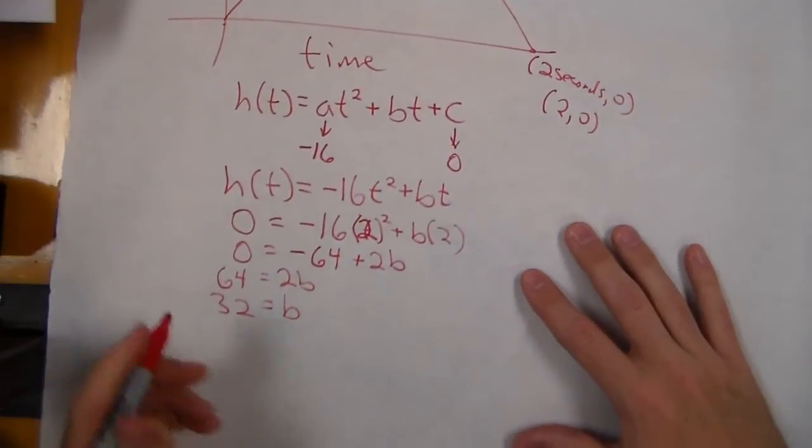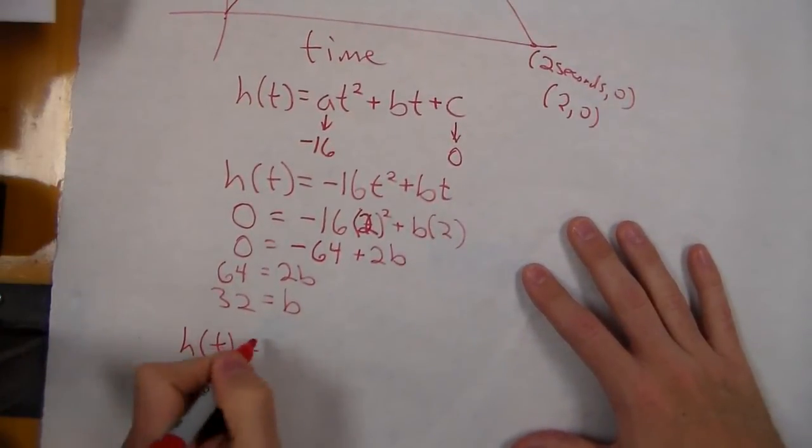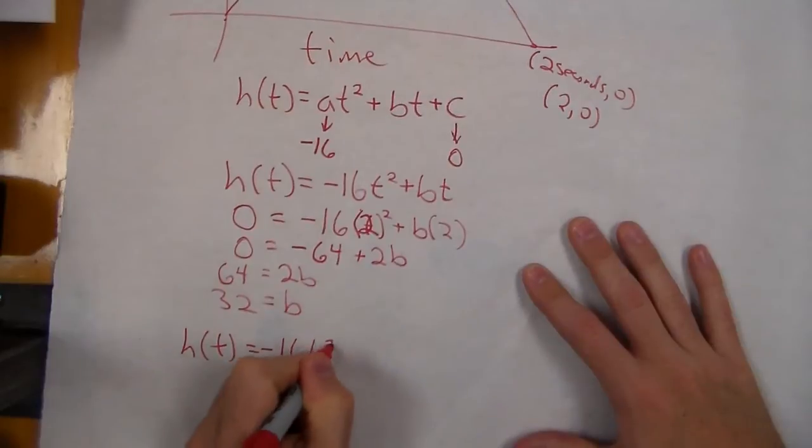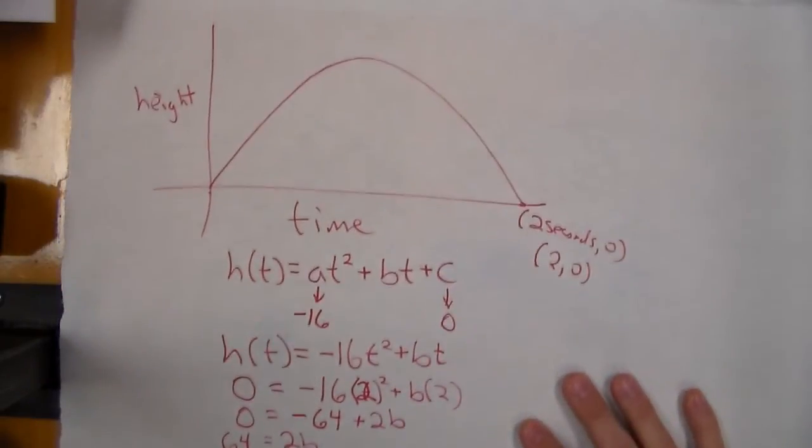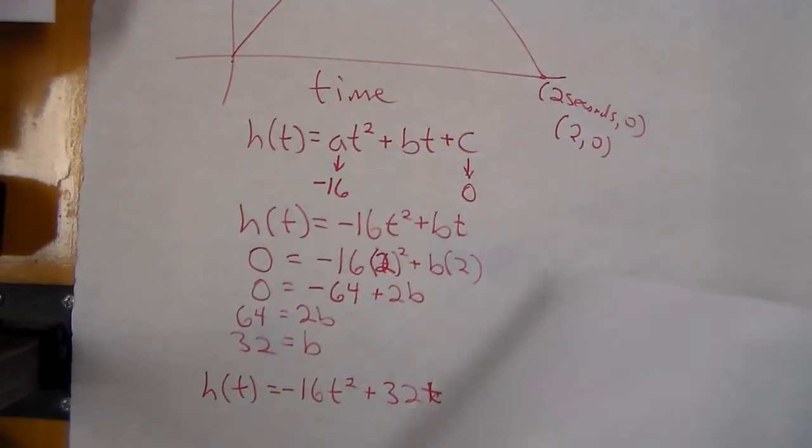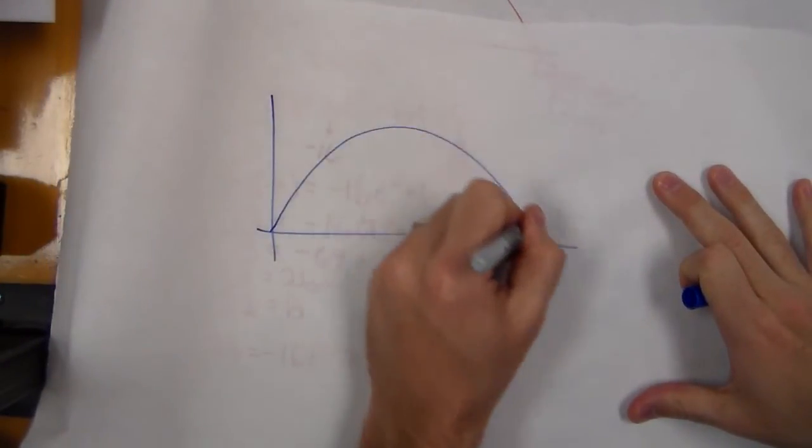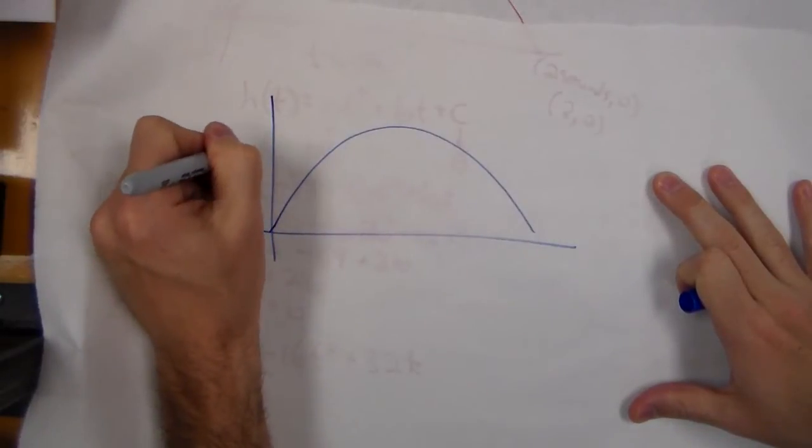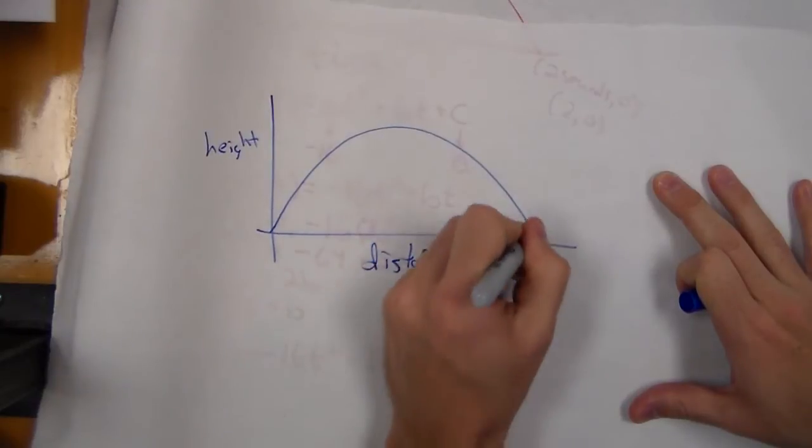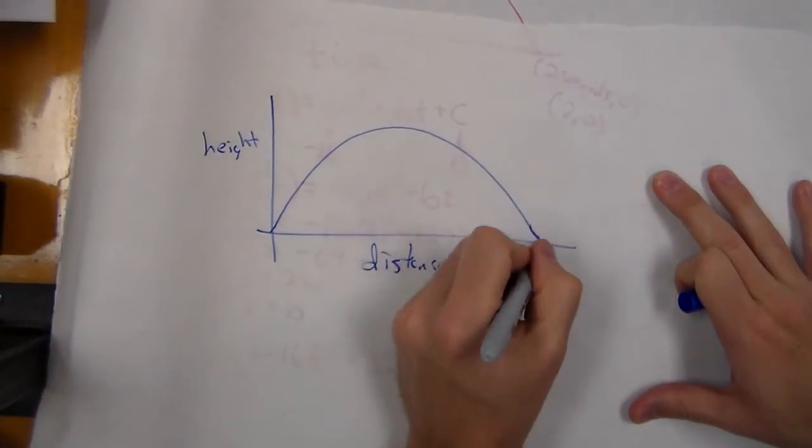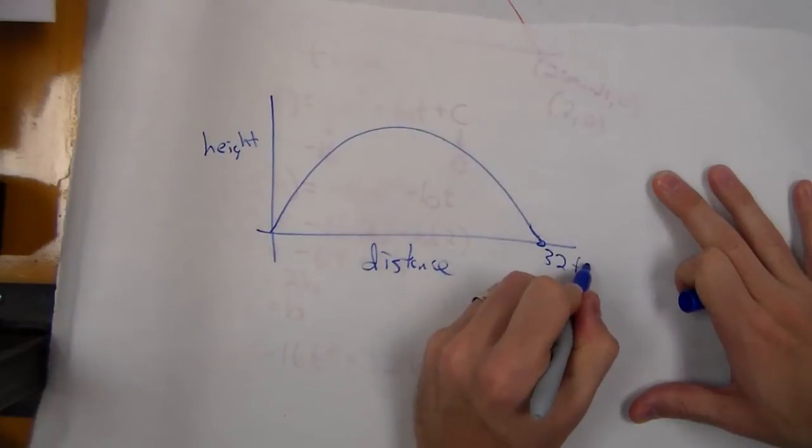Now my function is h(t) = -16t² + 32t. But now we need to look at the position function. We want to see if we shot it in the air, almost like if we were looking at the side, what the height and distance was to figure out how far it went. Let's say we measured it and it went 32 feet.